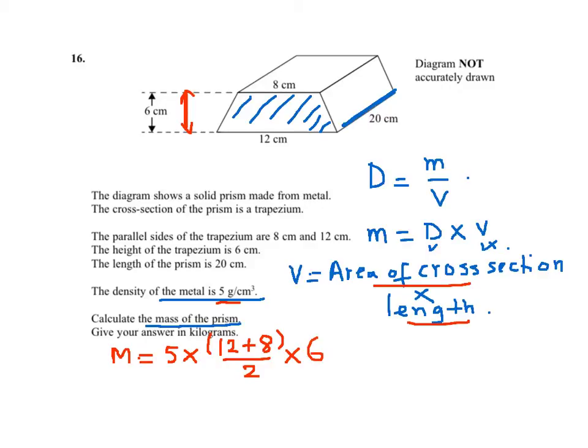So that's the area of the cross section, times the length of the prism, which is 20.